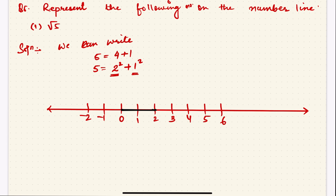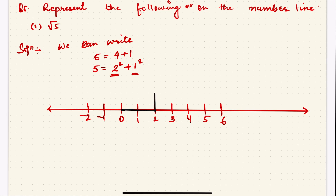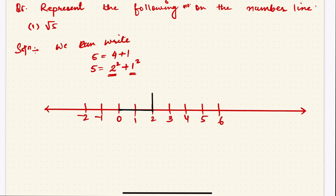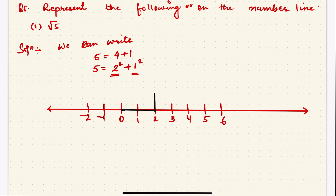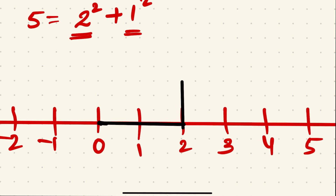From the point 2, use your scale and mark a distance of 1 unit perpendicular to the number line. The distance from 0 to 1 — use that same distance and mark it here. While drawing this perpendicular line, make sure the angle is 90 degrees. You can use a protractor for this.